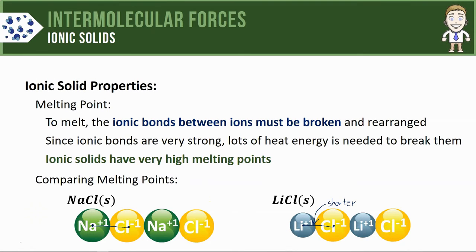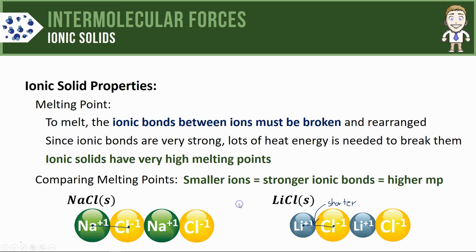According to Coulomb's law, anytime charged particles are closer together — as with lithium and chloride ions — there's going to be a stronger attraction between them. So smaller ions will have stronger ionic bonds, which leads to a higher melting point.